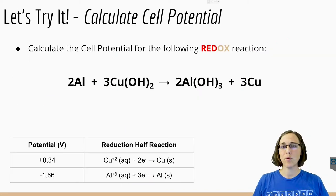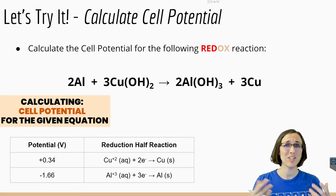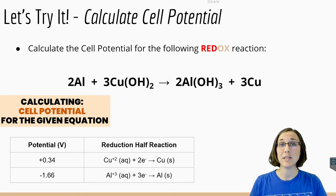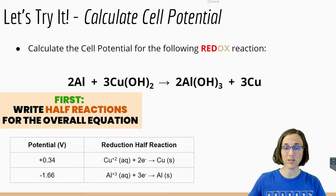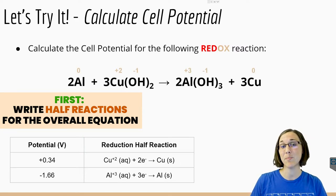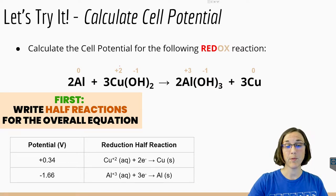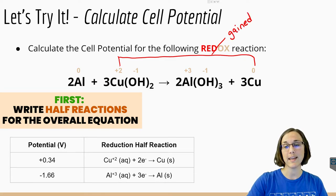What about if we're given an equation first and we have to calculate the cell potential for the equation given — not just between any random two metals? The first thing we need to do is write out the half reactions for this overall chemical equation. In order to do so, we need to write the oxidation states above each and determine which one gains or loses electrons. The copper went from a plus 2 charge to a zero charge, meaning it must have gained electrons, which means that it is the place where reduction was occurring.